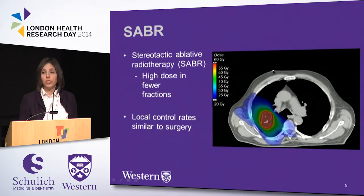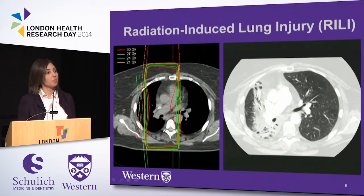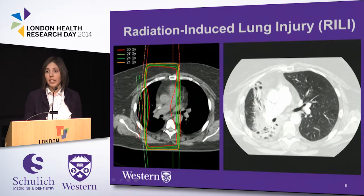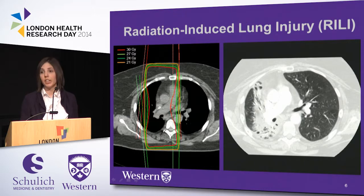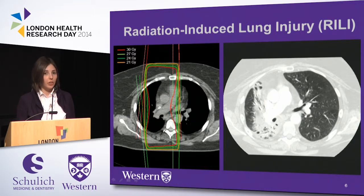This allows SABR to achieve local control rates similar to surgery of over 90% at 3 years. However, after any type of radiotherapy to the lungs, radiation-induced lung injury can occur as radiation pneumonitis and radiation fibrosis, which appear as radiographic changes on CT.